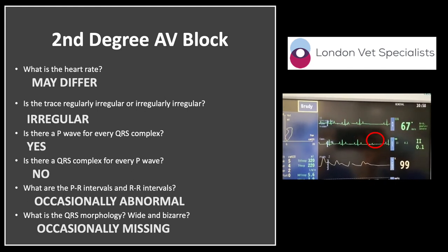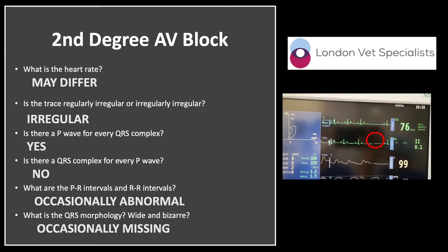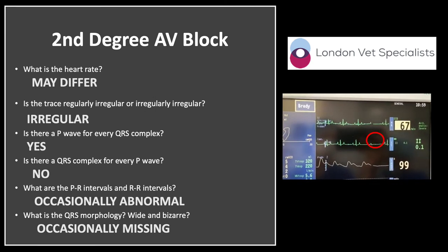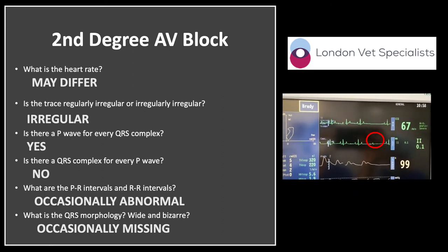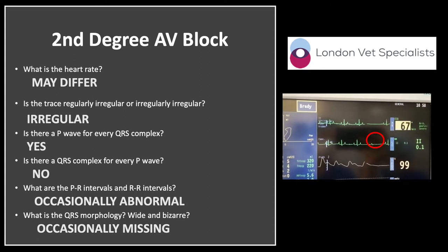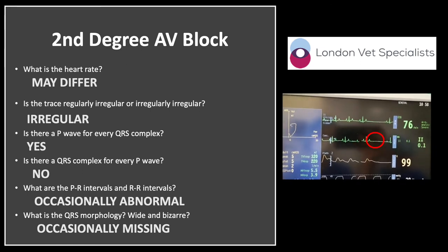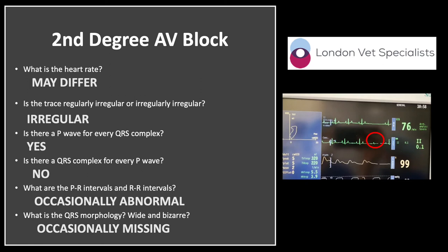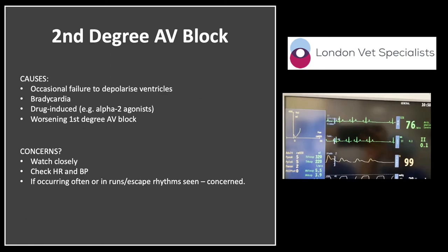Second degree AV block is shown by loss of the QRS complex, so there are lone P-waves occasionally. This means the ventricles fail to depolarise as there is no electrical impulse passing through the AV node. It is a one-off event so easily missed. It is important to watch these closely and alert the surgeon in case they develop and require treating, especially if there is severe bradycardia and low blood pressure. With the ventricles failing to depolarise, escape rhythms may develop — a random QRS complex arising completely disconnected from a P-wave — often a sign that second degree AV block is worsening and treatment should be considered.